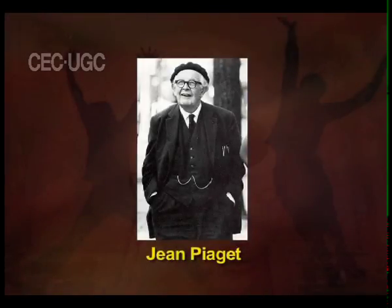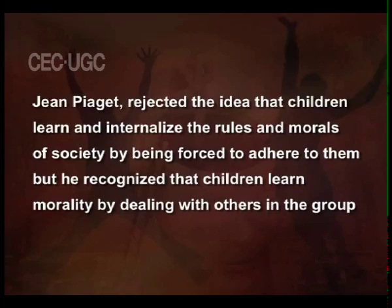John Piaget, a Swiss psychologist famous for his research on cognitive development, explored how children developed moral reasoning. Piaget rejected the idea that children learn and internalise the rules and morals of society by being forced to adhere to them, but he recognised that children learn morality by dealing with others in the group. He reasoned that there was a process by which children conform to society's norms of what is right and wrong, and the process was active rather than passive.